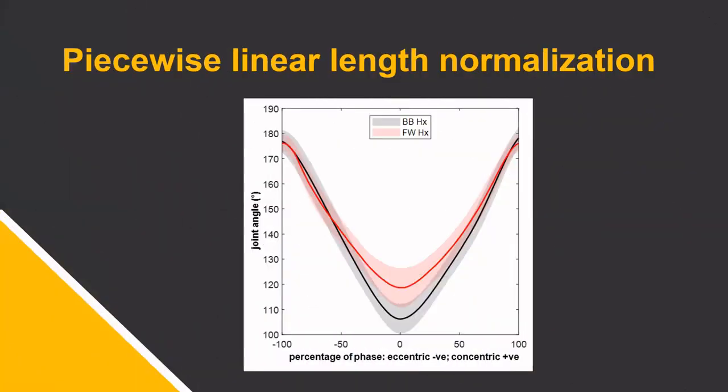As well as linear length normalization, it's possible to use piecewise linear length normalization to time normalize individual phases of the movement and temporarily align not only the start and end of the cycle, but also multiple events or key instances during the movement.